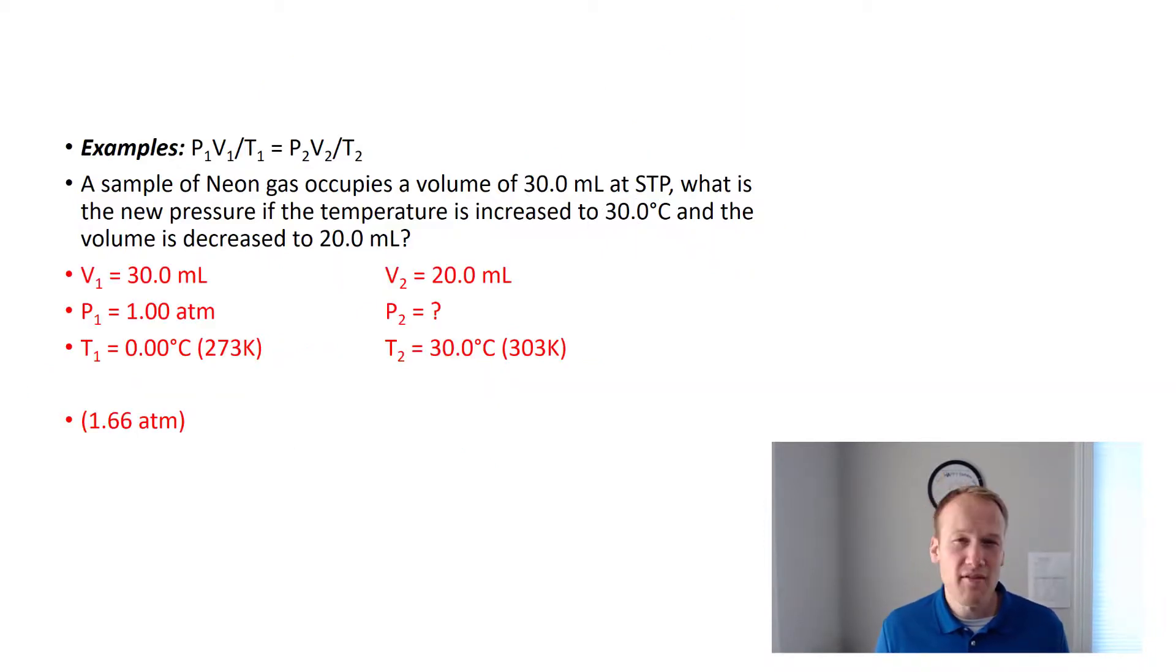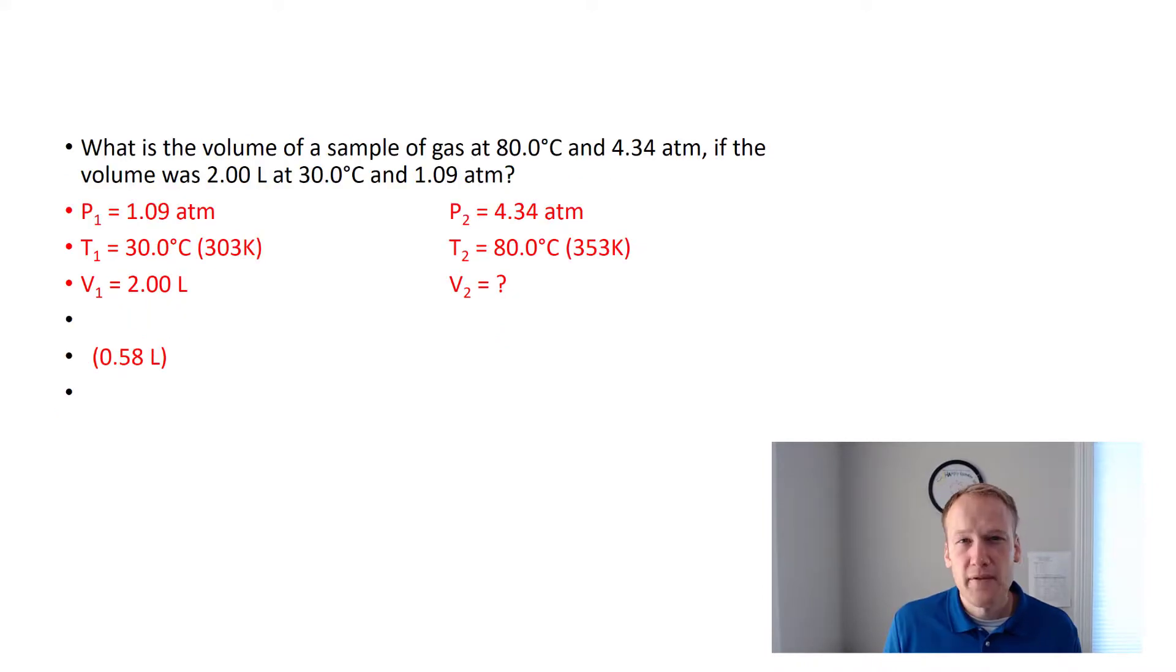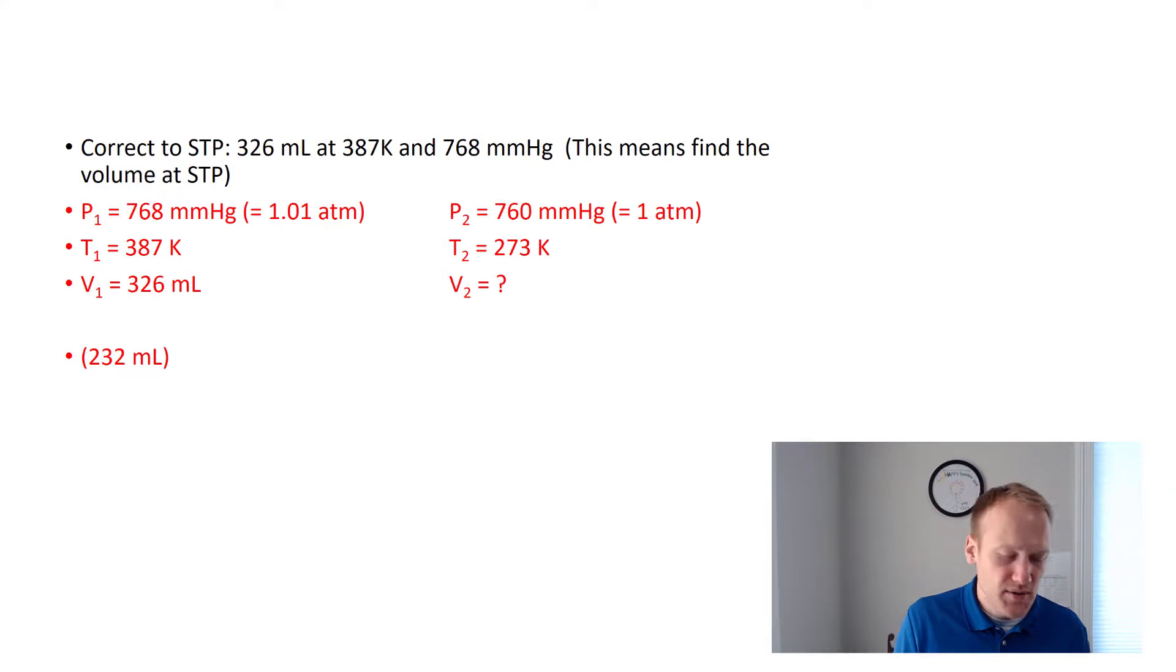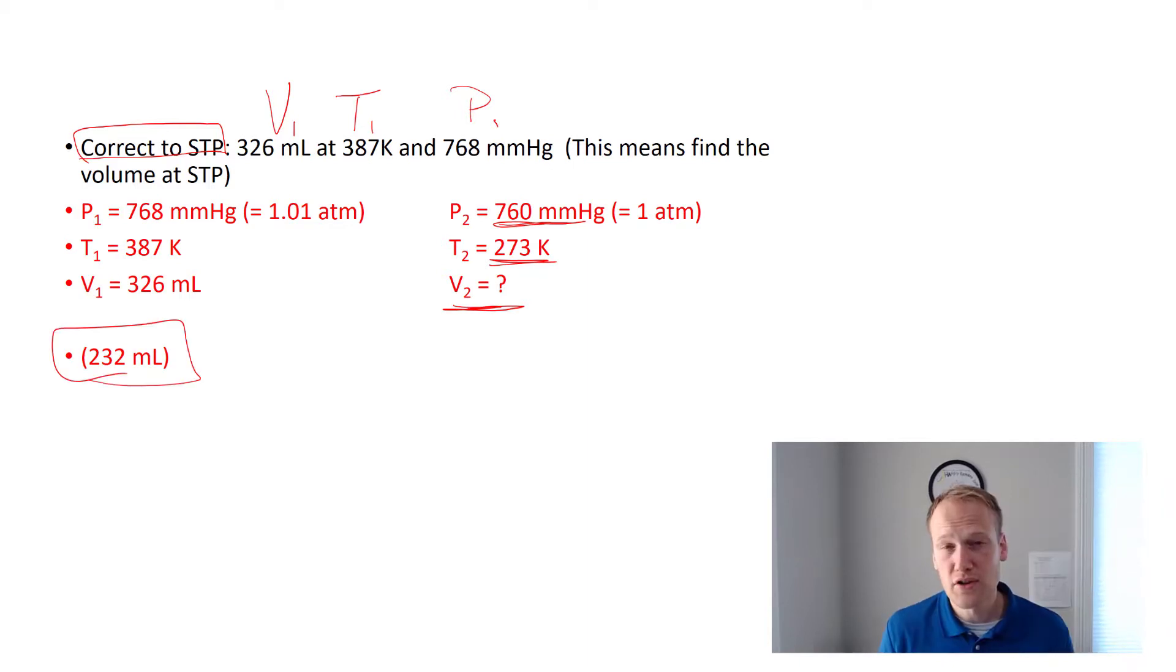This equation is handy when you have more than one variable changing in a scenario. For the sake of time, I'm going to move past this one and go ahead and show you the last one. This is another basic combined gas law problem. If you look at the last one here, there's a couple things to note. It gives you the first scenario, which is V1, T1, and P1. But then it says correct to STP. What that's telling you is the second scenario should be standard pressure, which is 760 millimeters of mercury, and standard temperature, which is 273 Kelvin. Then we just solve for V2, which works out to be 232 milliliters. Anytime you see something that says correct to STP, it's telling you two variables.